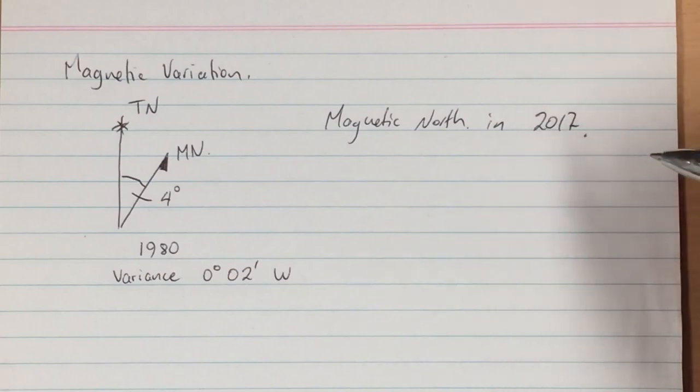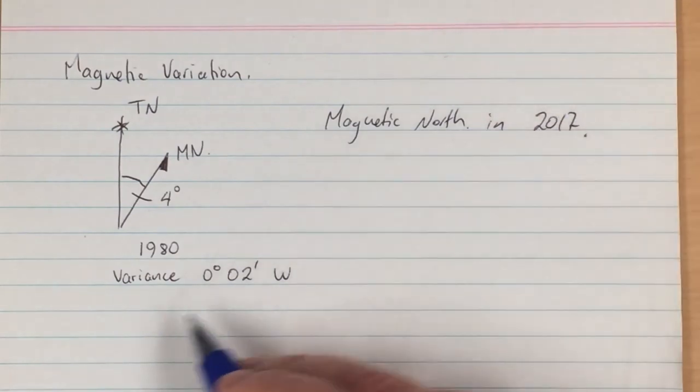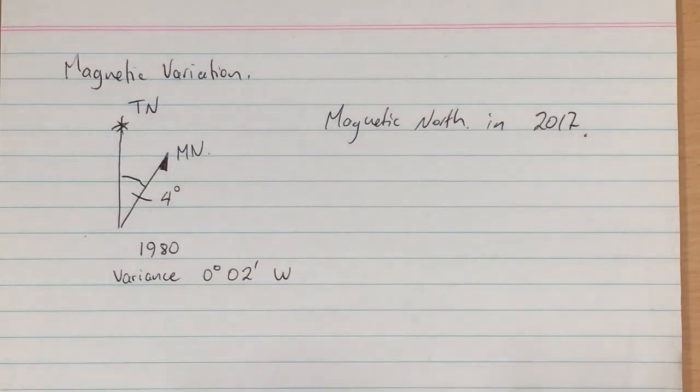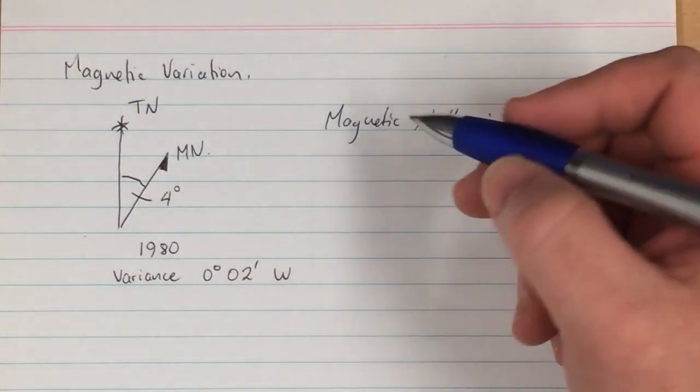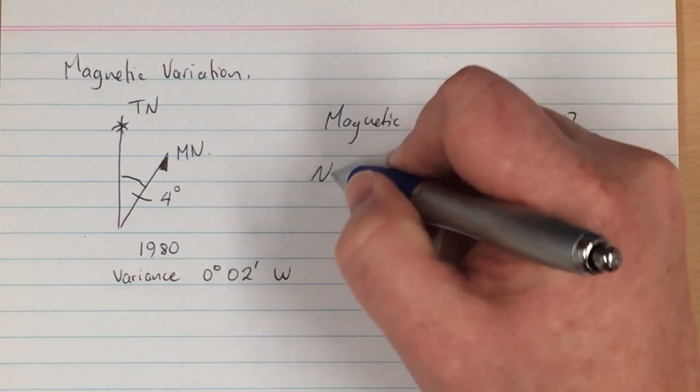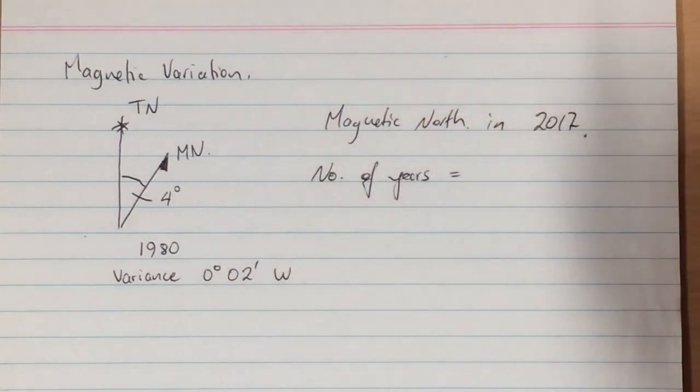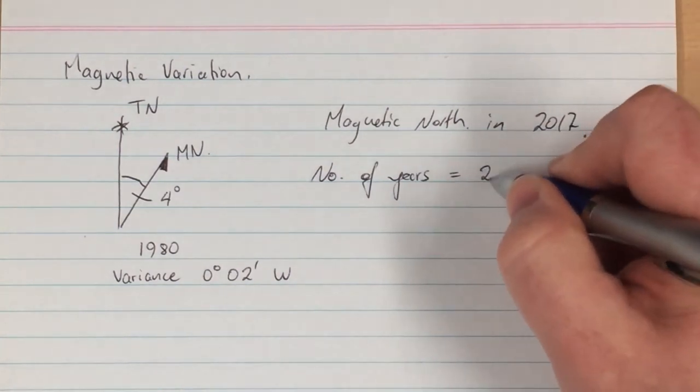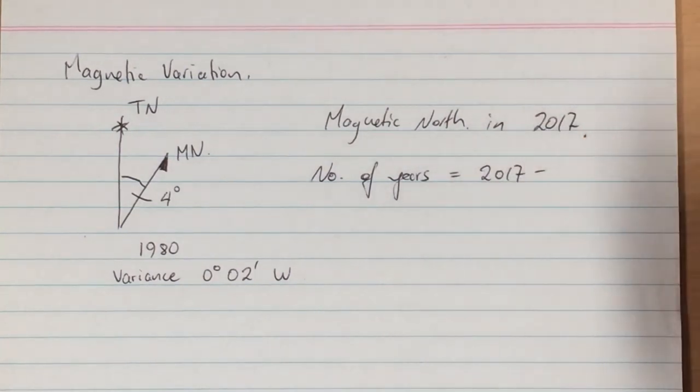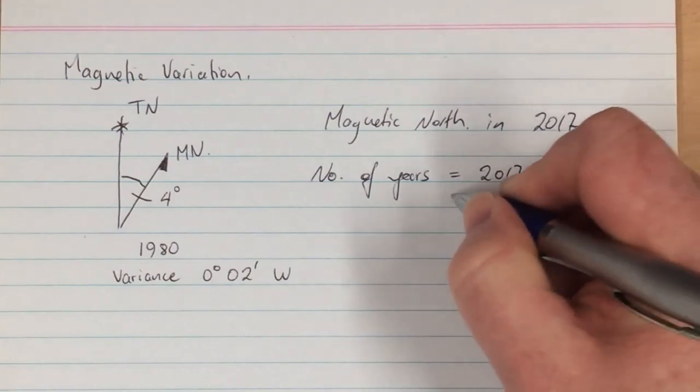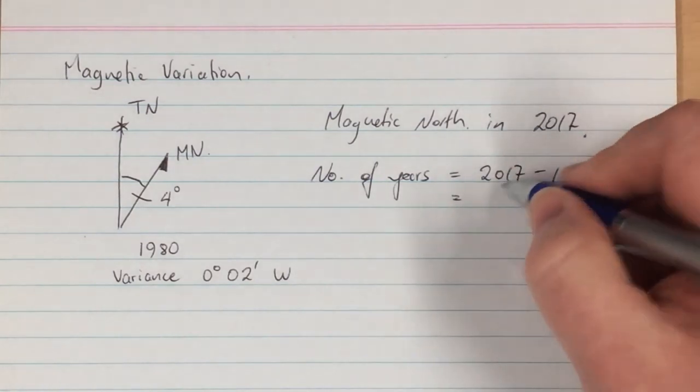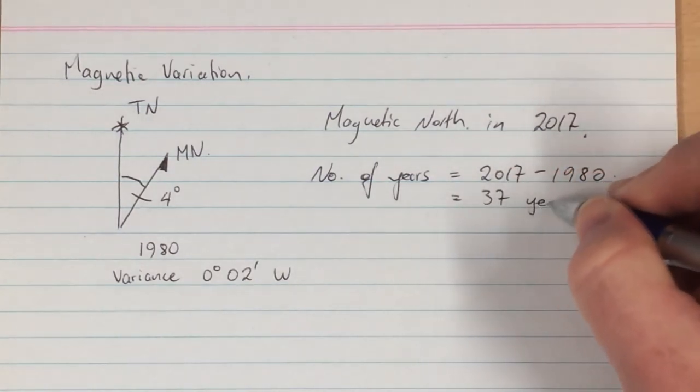what we need to do first of all is determine the variance. So the variance is 2 minutes in a westerly direction per year. So the number of years is 2017 minus 1980, which will be 37 years.